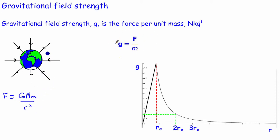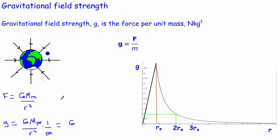We can work out the gravitational field strength by combining these two equations. The gravitational field strength g equals F divided by m. So g equals GMm/r² divided by the mass of our object. The mass of the object on top and bottom cancel out, and so the gravitational field strength of this planet is given by g = GM/r², where M is the mass of the planet and R is the distance from the centre of the planet to the point at which we want to know the gravitational field strength.